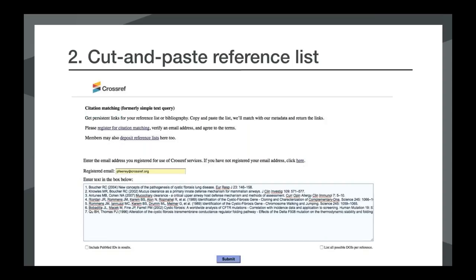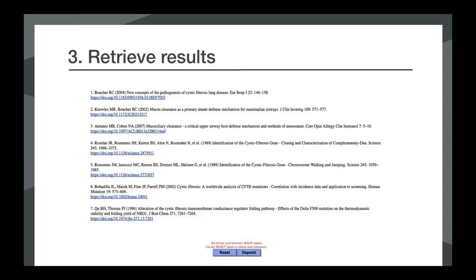To use this form, you've registered your email address, enter it into the appropriate box, cut and paste your reference list into the form, and select Submit. Fairly quickly you'll get your reference list back with the DOI links included, which you can then cut and paste back into your manuscripts. Note that not all items have DOIs, so not all references will be matched, but it does a pretty good job of finding all available matches.